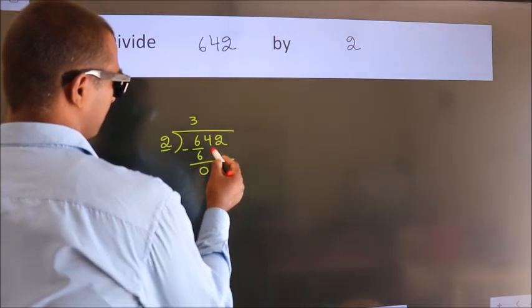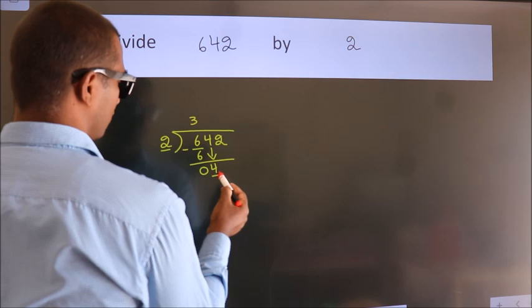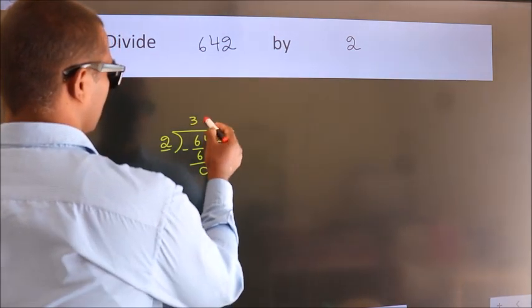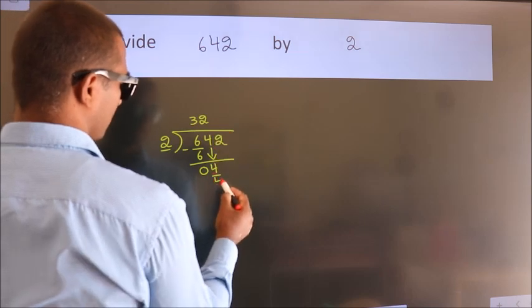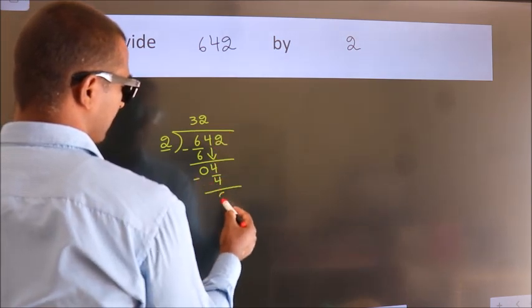After this, bring down the beside number. So 4 down. So 4. When do we get 4? In 2 table, 2 twos, 4. Now we subtract. We get 0.